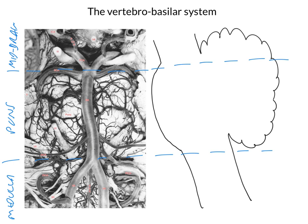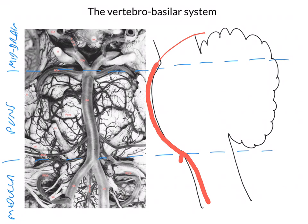Let's draw these vessels on the lateral view using a relatively thick pen in red. Here is the left vertebral and there's the right vertebral. Here is the basilar artery running over the surface of the pons. The basilar artery at the top of its course bifurcates into the posterior cerebral artery, and just proximal to that it gives off the superior cerebellar artery.